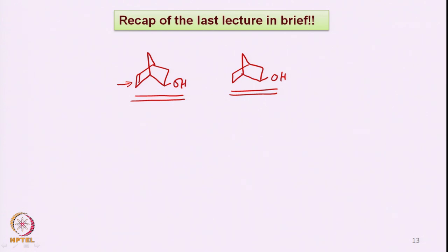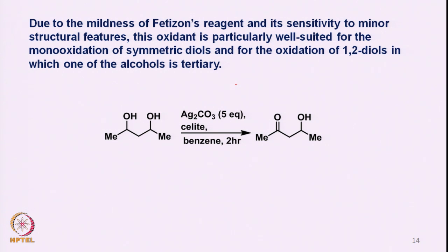There is a competition between the double bond and the OH, and therefore this particular alcohol reacts slower than an alcohol devoid of such a double bond. Due to the mildness of Fetizon's reagent and its sensitivity to minor structural features, this oxidant is particularly well suited for the mono-oxidation of symmetric diols.